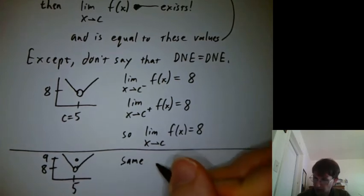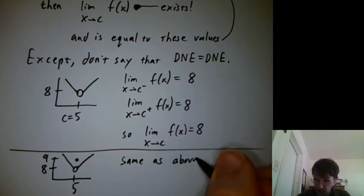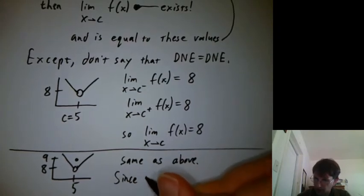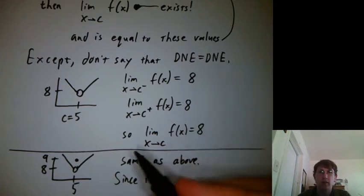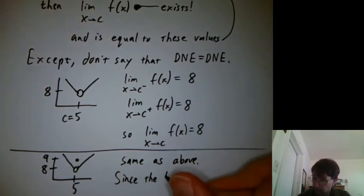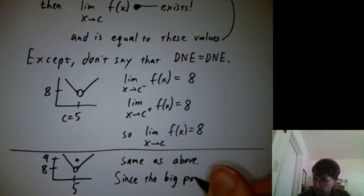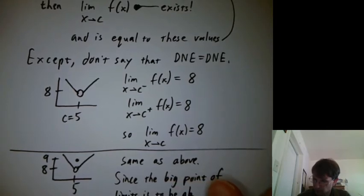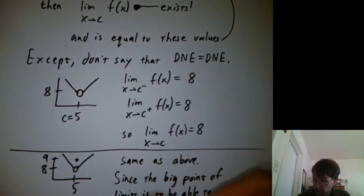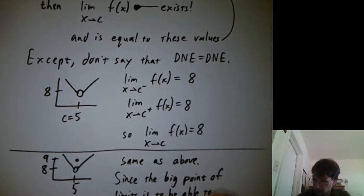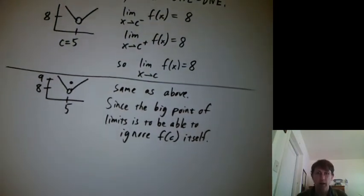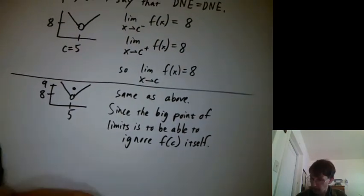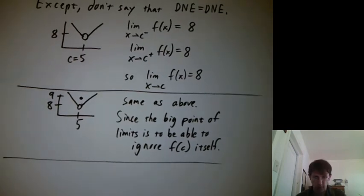So all this stuff is the same as above. Since the big point of limits is to ignore f of c itself.